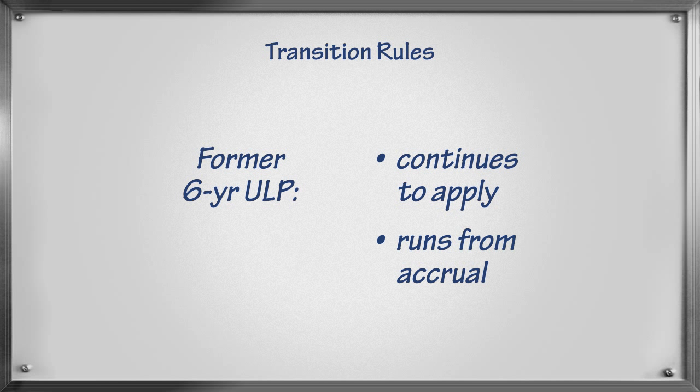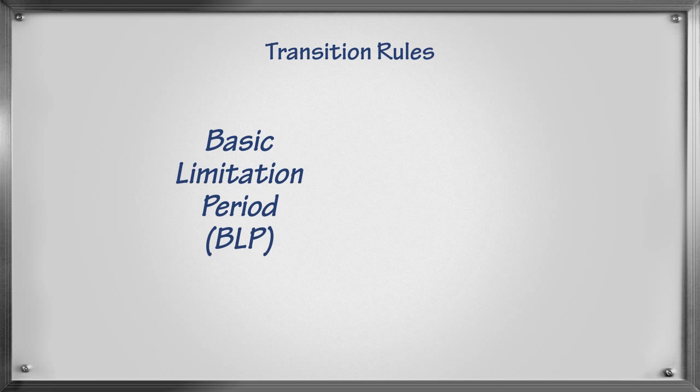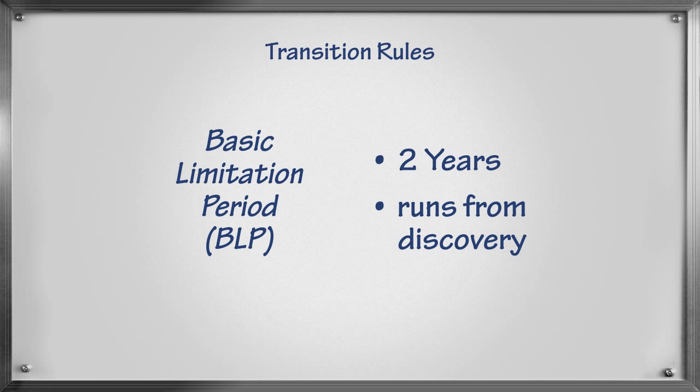In a medical malpractice or negligence claim, this will be the date of damage. In essence, where a plaintiff's claim is against a doctor, hospital, or hospital employee, there is no change to how the ultimate limitation period runs under the transition rules. But when does the basic limitation period begin? The transition rules say that the 2-year basic limitation period applies from the date of discovery, unless the new act specifies otherwise.